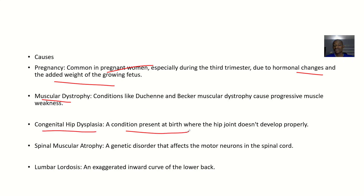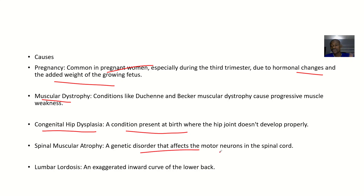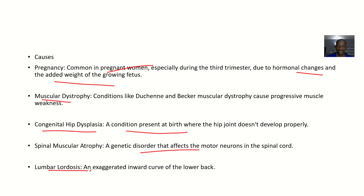Congenital hip dysplasia is a condition present at birth where the hip joint doesn't develop properly. Spinal muscular atrophy is a genetic disorder that affects the motor neurons in the spinal cord, causing the muscles to reduce in size. Lumbar lordosis, an exaggerated inward curve of the lower back, is also a cause.